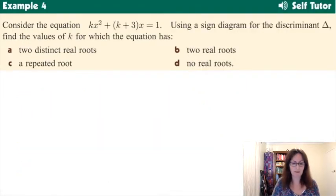Next, a little bit more complex here, consider this equation, and using a sign diagram for the discriminant, find the values of k for which the equation has all these different combinations. So I guess the first thing you'd start thinking about is the discriminant. So of a quadratic, we need it in a particular form. Hmm, but we've got the 1 on the right-hand side. You need to shift that to the left, so that we can get the right-hand side equal to 0.